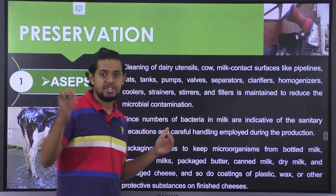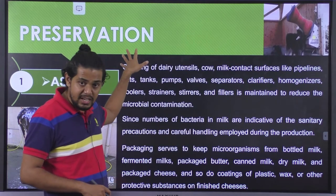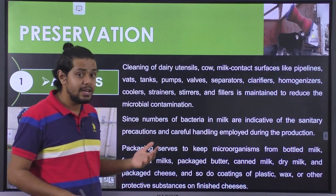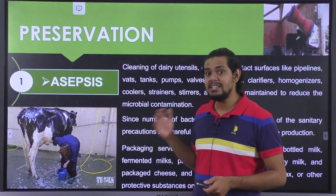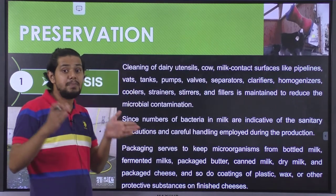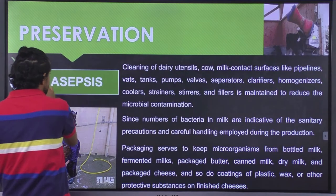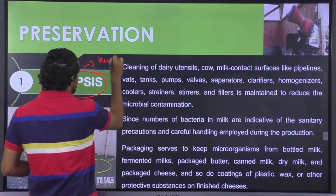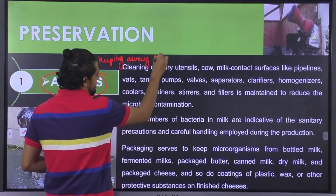How exactly can these kinds of contamination be decreased? We will have to employ a preservation technique to effectively avoid contamination. The first type of preservation technique that could be employed is asepsis. Asepsis means keeping away the microorganisms.